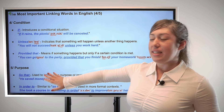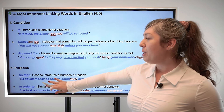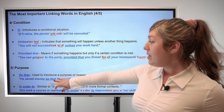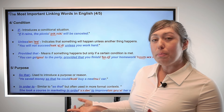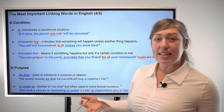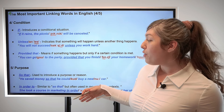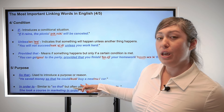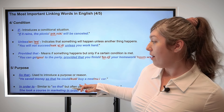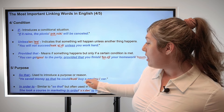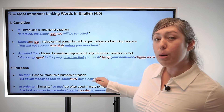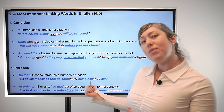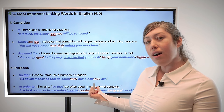Next we have linking words of purpose. Let's start with 'so that.' We use this to introduce a purpose or a reason. For example, he saved money so that he could buy a new car. So we're introducing the purpose or the reason: why is he saving money? So he can buy a new car.